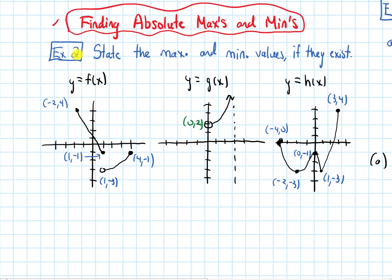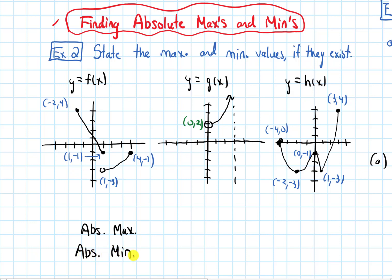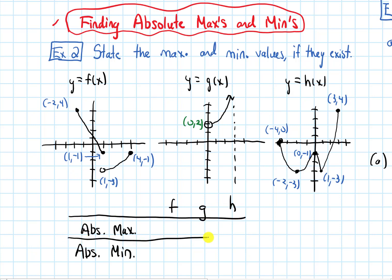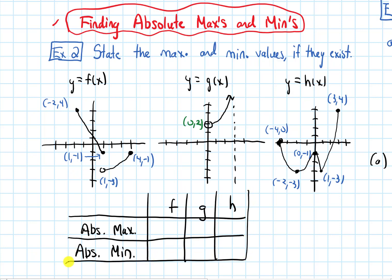The example says to state the max and min values of the following graphs, if they exist. I'm going to make a table to organize this — absolute max and absolute min as rows, and each of the functions f, g, and h as columns. Let's separate out some rows and columns to make this table.